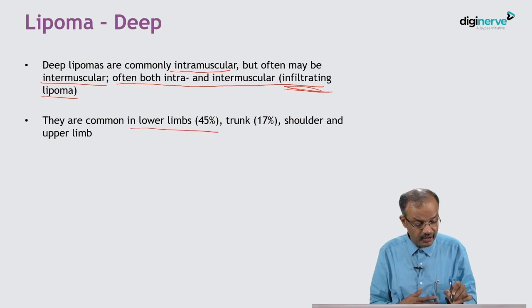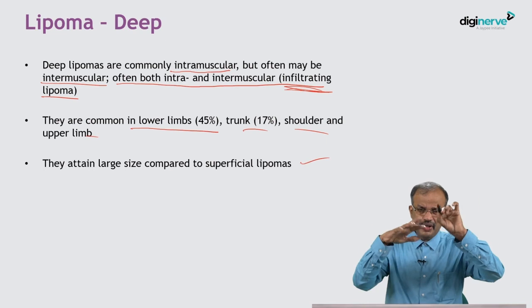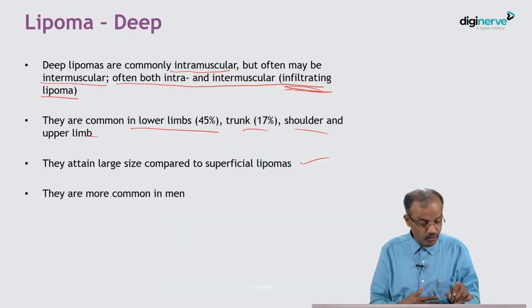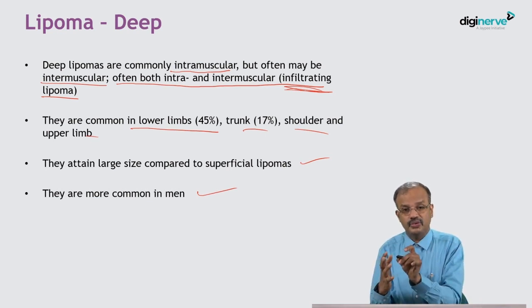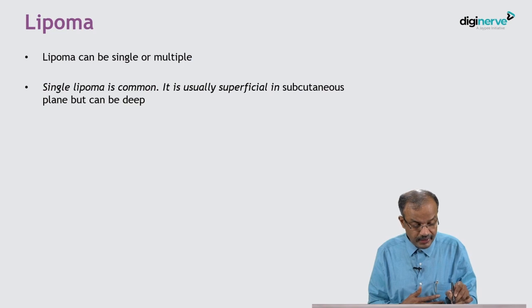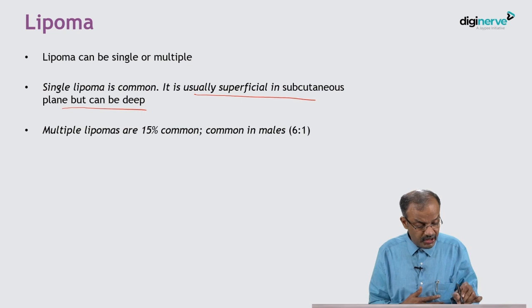Deep lipomas are common in the lower limb — intramuscular or intermuscular — as well as in the trunk, shoulder, and upper limb. They attain a very large size compared to superficial lipomas, and patients may not notice them because they are deep to the muscle. Deep lipomas are more common in men. Lipoma can be single or multiple — single is more common. Multiple lipomas have an incidence of 15 percent and are more common in males.